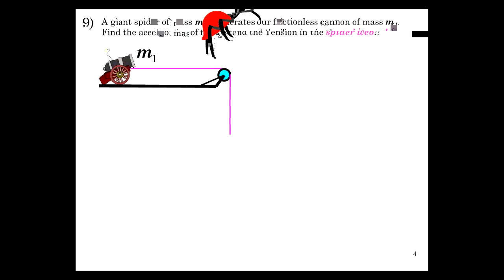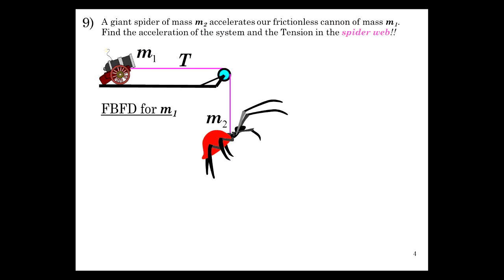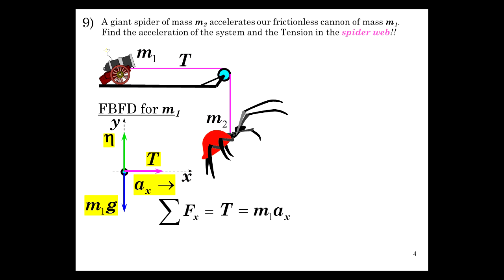Let's check out this frictionless system. Find the acceleration and tension of a spiderweb. There's our cannon and our new friend the spider. Free body diagram for m1, x and y defined. We have weight, we have normal, we have tension, acceleration in the x direction. Sum of those forces in the x is tension, so tension is mAx in this case.